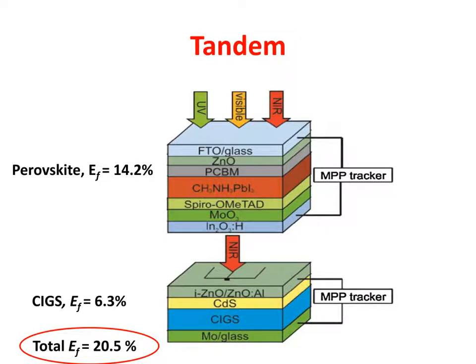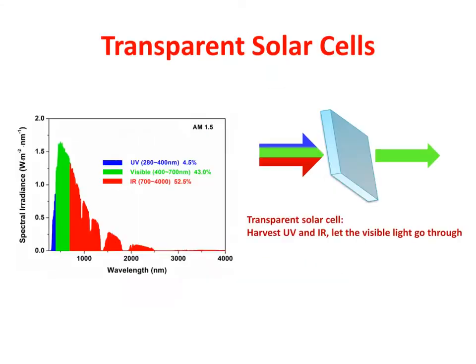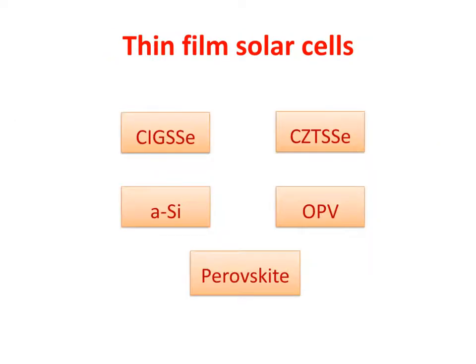Theoretically, with an infinite number of layers, the efficiency could reach as high as 68%. By designing a material to pass visible light while absorbing ultraviolet and infrared photons, we obtain a transparent solar cell that could be applied onto windows without affecting their function.